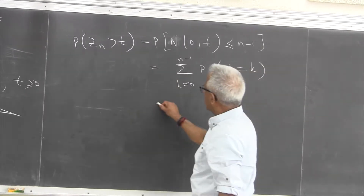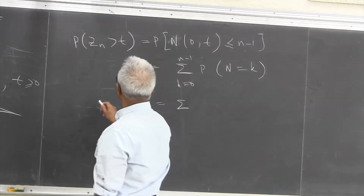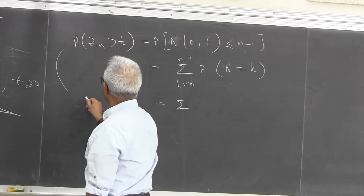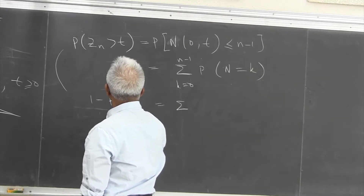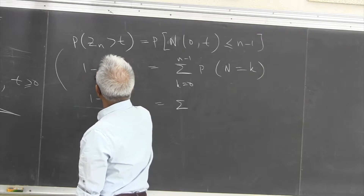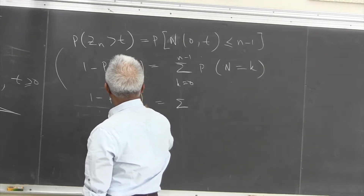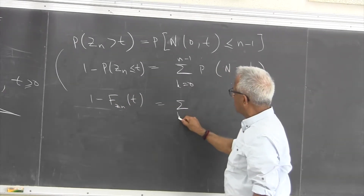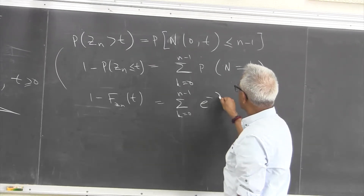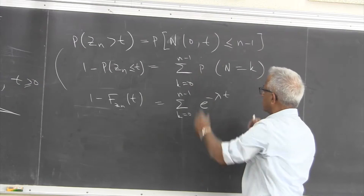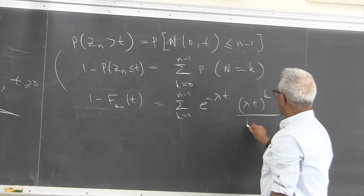So we can write this as 1 minus F_{z_n}(t), which is 1 minus the probability of z_n less than or equal to t. That gives us the distribution function. On the other side, it is the sum from k equal to 0 through n minus 1 of e raised to minus lambda t, times lambda t to the power k over k factorial, since we are looking at a duration of t.